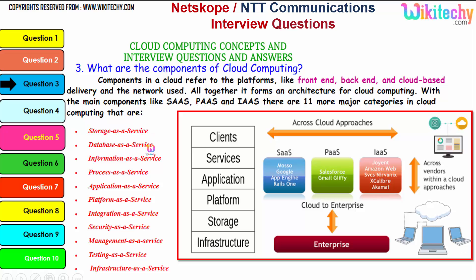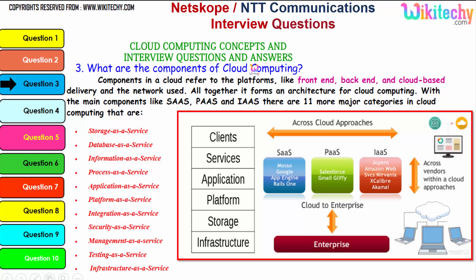There are 11 major categories in cloud: storage as a service, database as a service, information as a service, process as a service, application platform, integration, security, management, testing, and finally infrastructure. These are additional services associated with the three major services to form cloud computing. For Software as a Service, typical examples are App Engine and Google Maso; for Platform it's Gmail and Salesforce; for Infrastructure as a Service there are companies like Amazon Web Services, Akamai, and others.